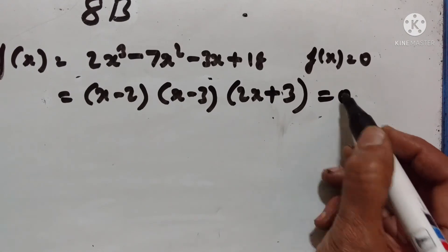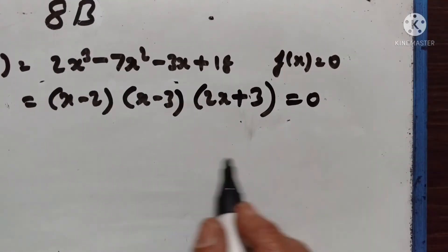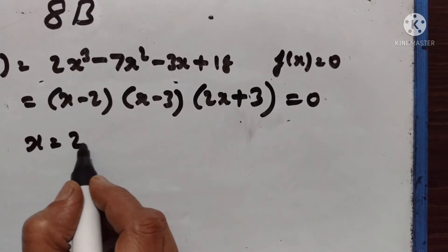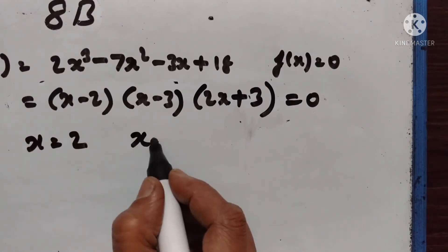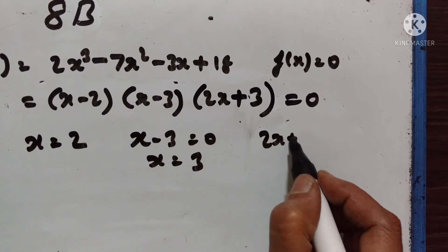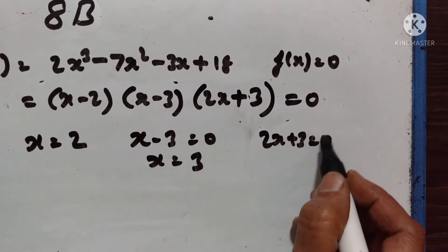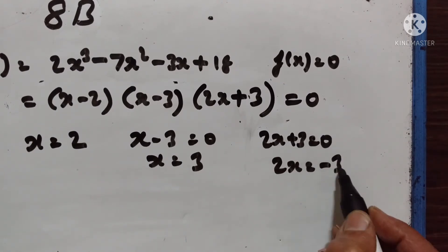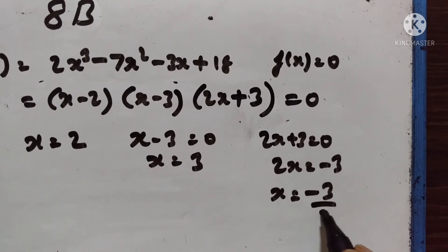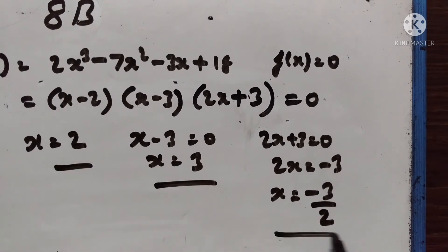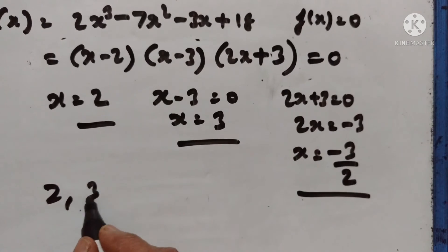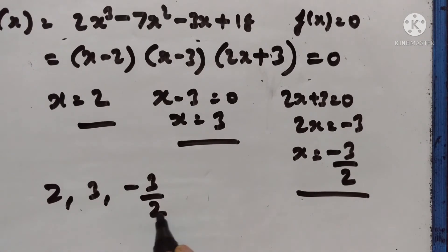If f(x) = 0: if x - 2 = 0, then x = 2. If x - 3 = 0, then x = 3. If 2x + 3 = 0, then 2x = -3, so x = -3/2. The values of x are 2, 3, and -3/2.